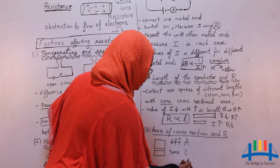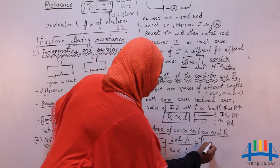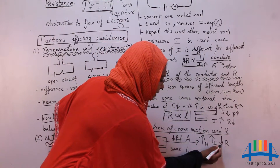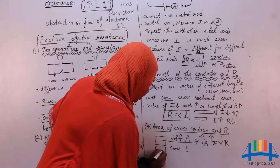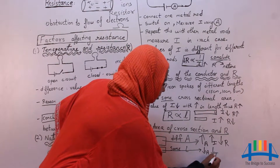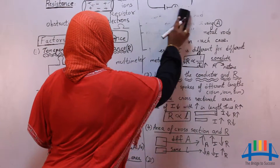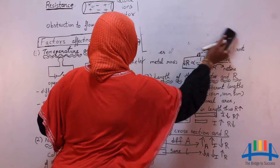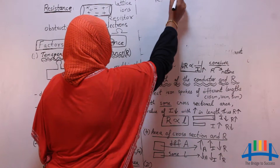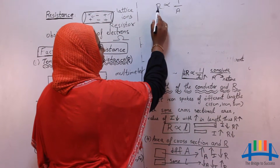The difference you notice is: the bigger the area, the more the current flow, and the less the resistance offered. For the smaller area, current flow will be less, so resistance offered is more. We can conclude that resistance and area are inversely proportional. Less area means more resistance, and more area means less resistance.